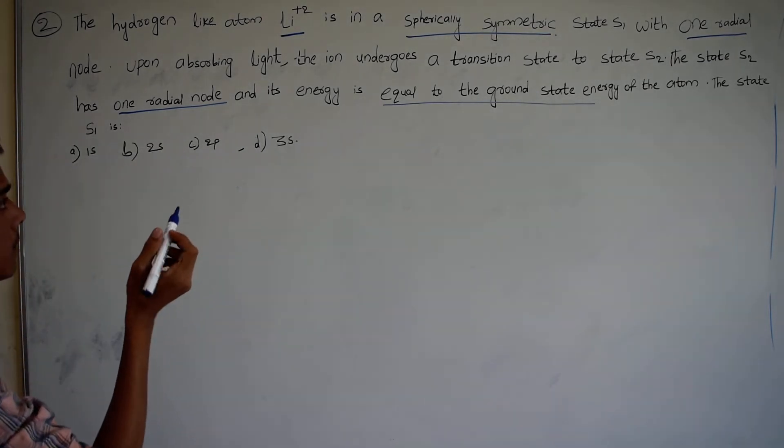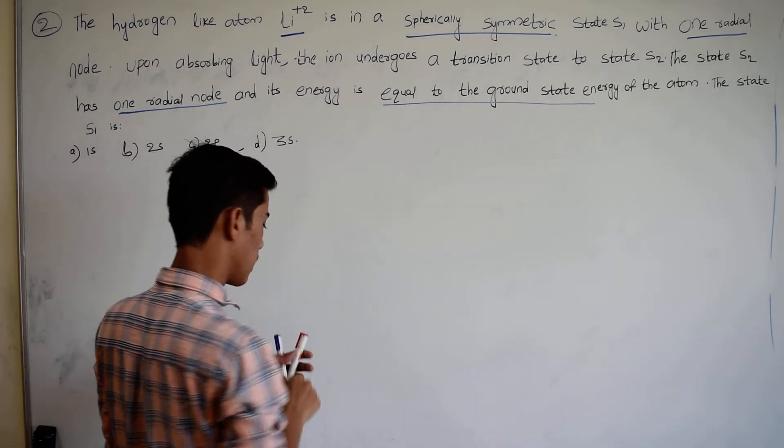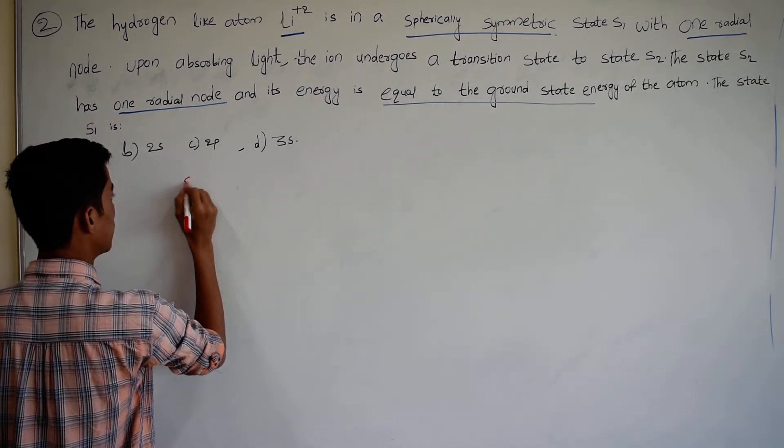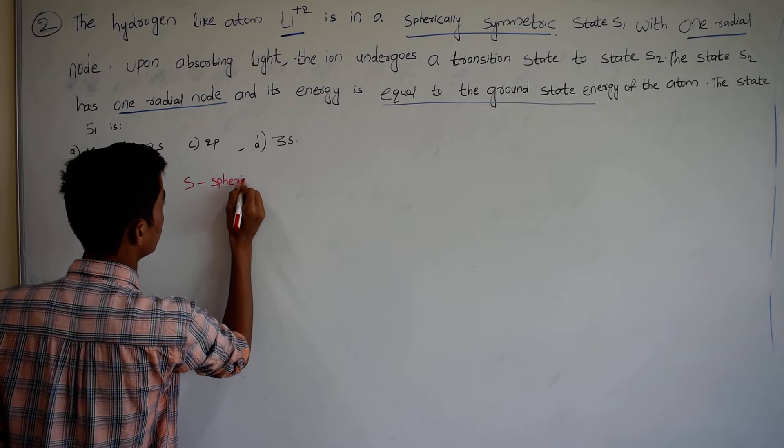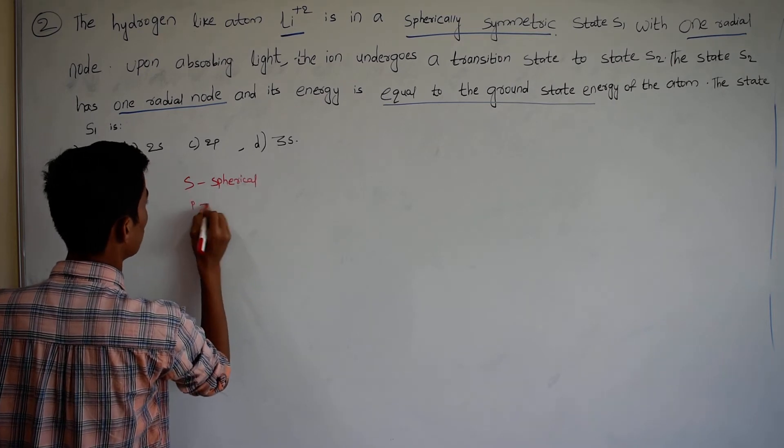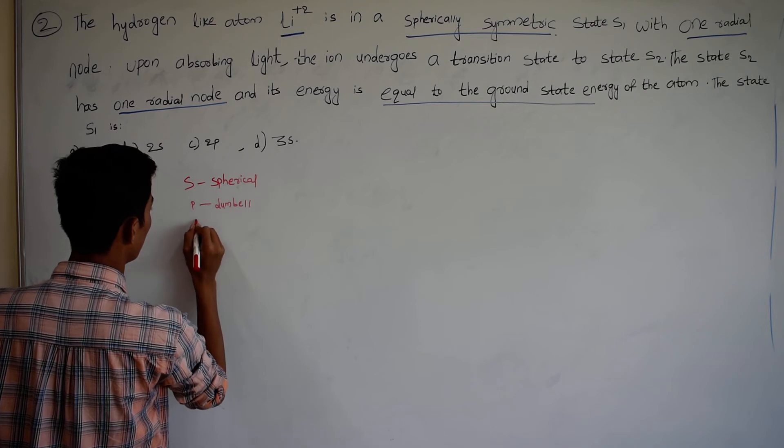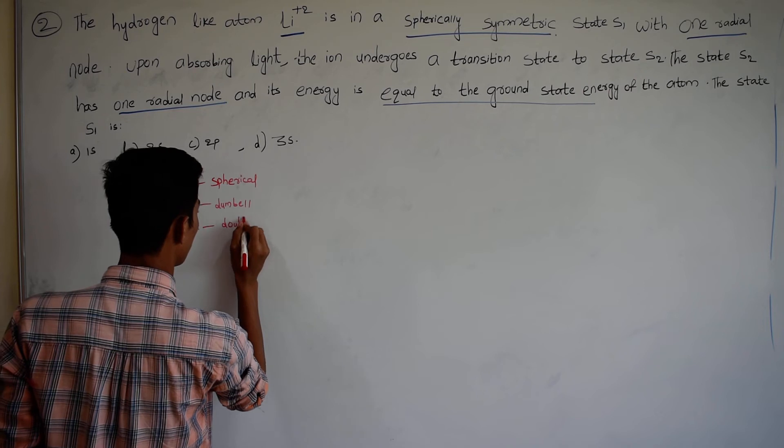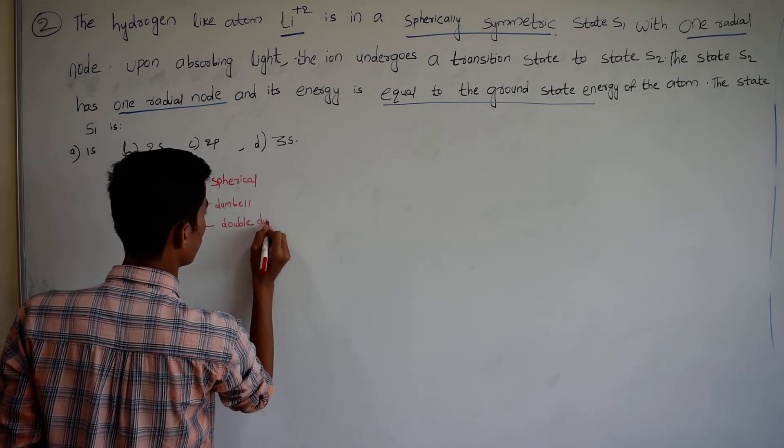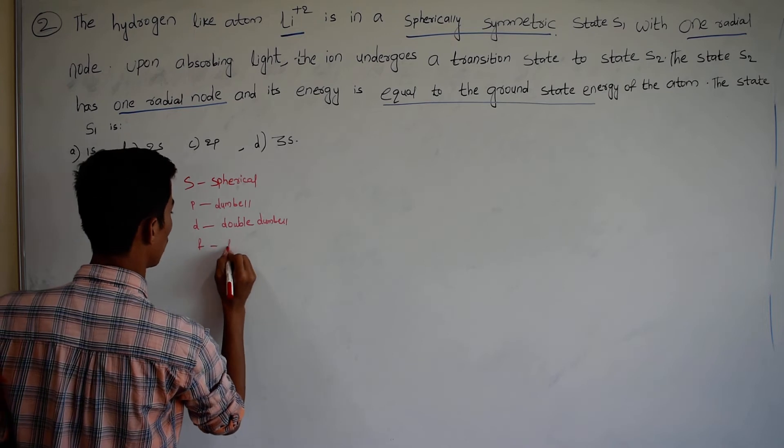Here we have a spherical symmetry. S is spherical, P is dumbbell, D is double dumbbell, and F is four-fold dumbbell.